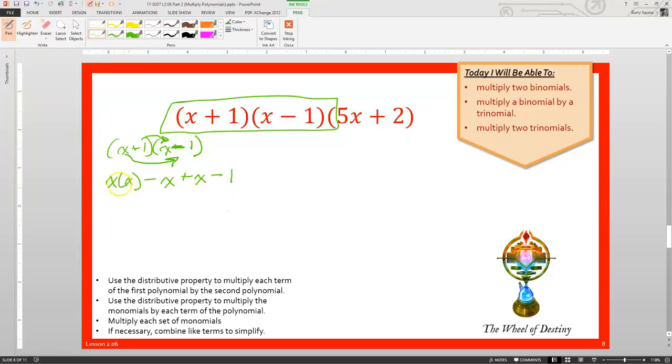So we're going to have x times x from our first distribution, minus x times 1. Then our second distribution is going to be plus x. And then 1 times negative 1 is negative 1. Combine all our terms. So we've got x squared, negative x, plus x, that's 0x, and then minus 1. So now we know that x plus 1 times x minus 1, that is the same thing as x squared minus 1.